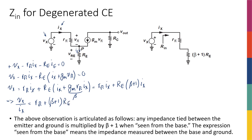Comparing normal CE and CE with emitter degeneration: in terms of biasing, the normal CE is worse; in terms of gain, normal CE had higher gain. But in terms of input impedance, the degenerated CE is much better. With normal CE I had just r_pi as the input impedance; now I have r_pi plus (beta + 1) times re, which is much greater.